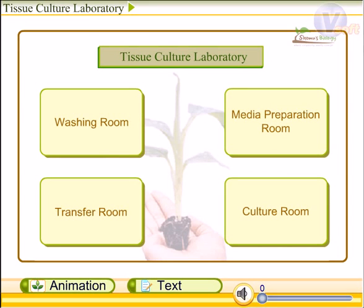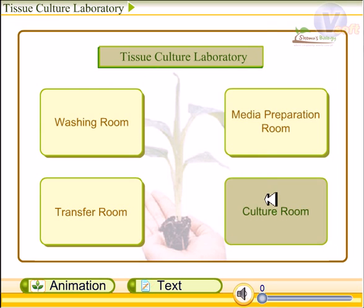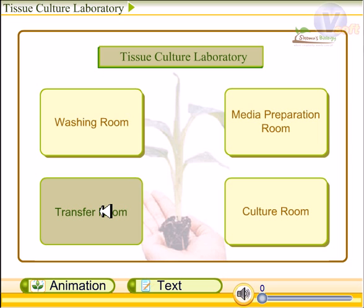Welcome friends. In this video, we will be talking about the tissue culture laboratory and the important measurements in it. The tissue culture laboratory consists of four main sections: the washing room, media preparation room, culture room, and the transfer room.